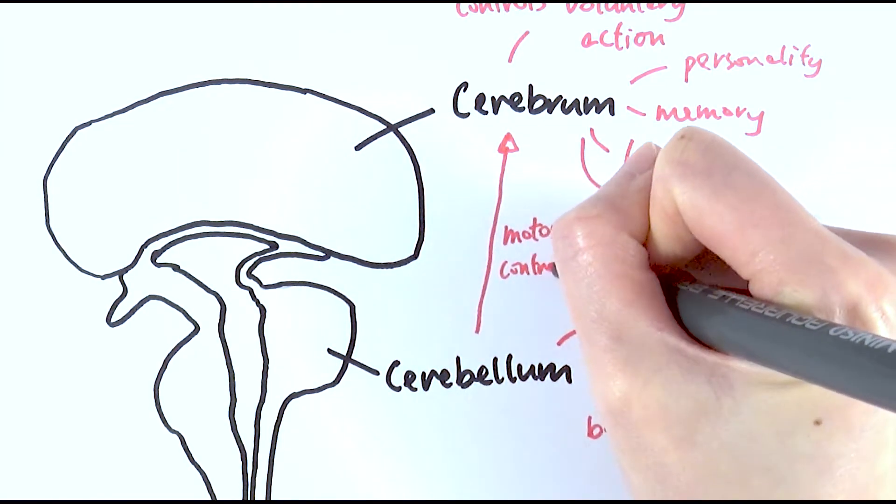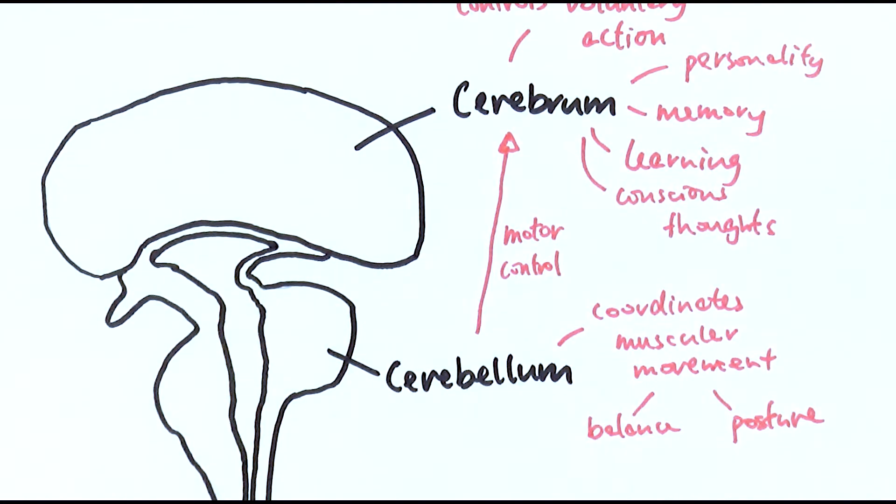So the cerebellum can actually work together with the cerebrum to control our body. So sometimes if you're just about to tip over, the cerebellum kicks into place and then it would start to balance yourself, and then your cerebrum would kind of voluntarily move your body and also send a signal to it to know what you need to do next to better balance yourself.